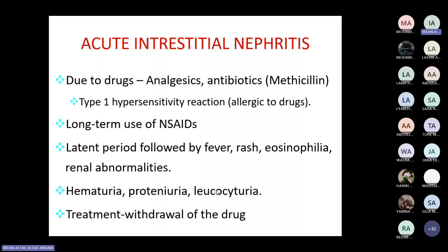Acute interstitial nephritis is another type of tubulo-interstitial disease. It can be due to analgesics or antibiotics such as methicillin, producing a type 1 hypersensitivity reaction due to allergy to the drug. It may also happen with long-term use of NSAIDs. There is a latent period followed by fever, rash, eosinophilia, and renal abnormalities — hematuria, proteinuria, leukocyturia (WBCs in urine). The treatment is withdrawal of the causative drug.